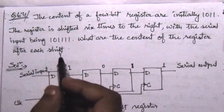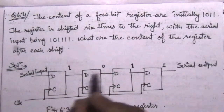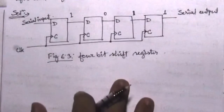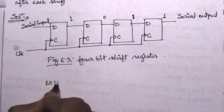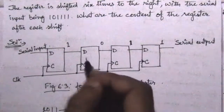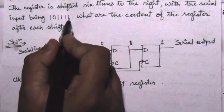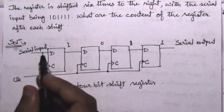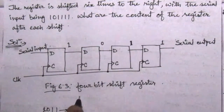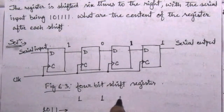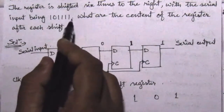We need to find what the contents of the register are after each shift. The serial input sequence is 1, 1, 1, 0, 1 — entered from the least significant bit. The initial content of the register is 1011.